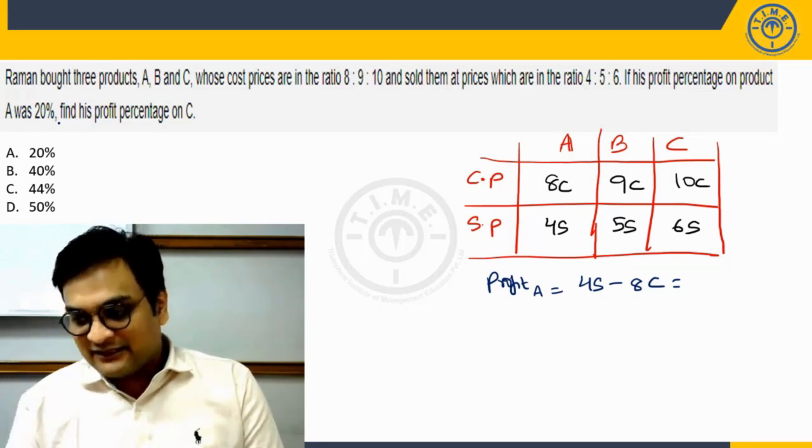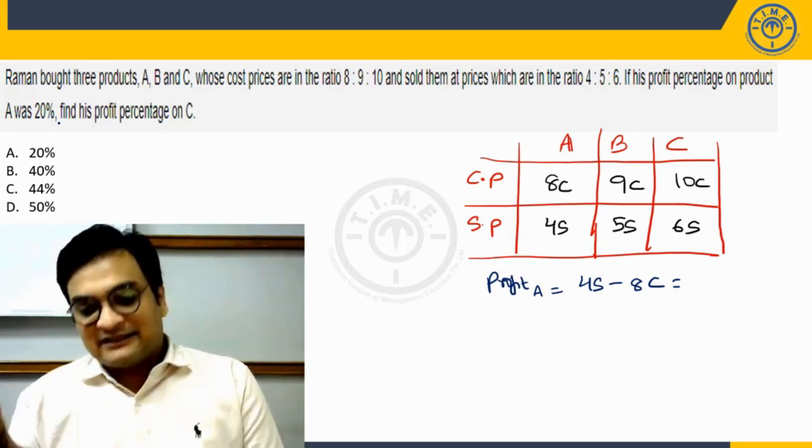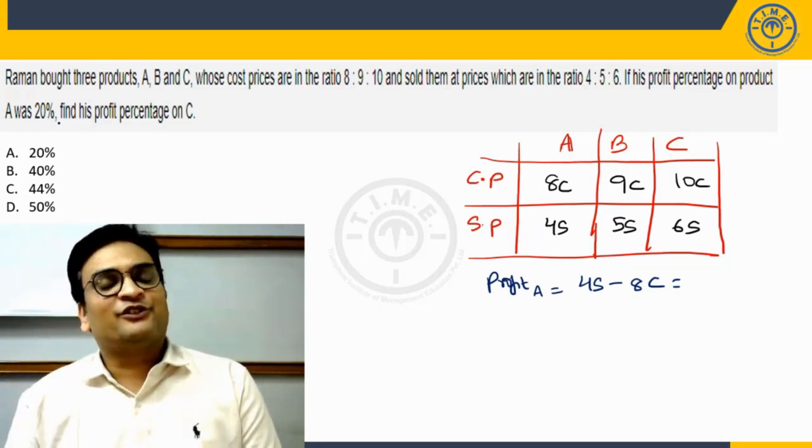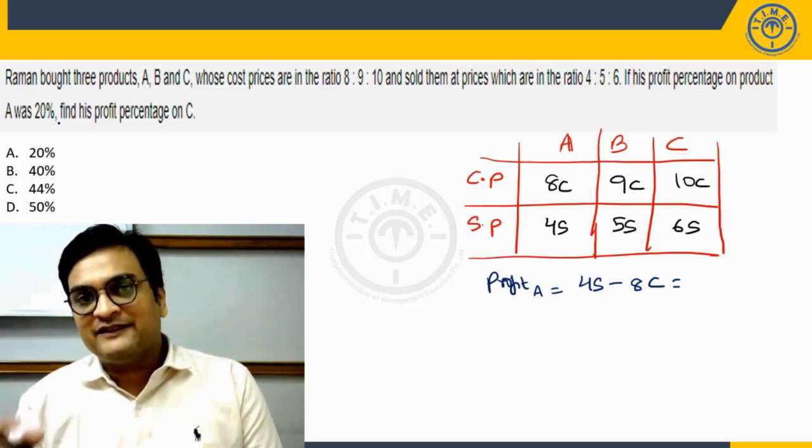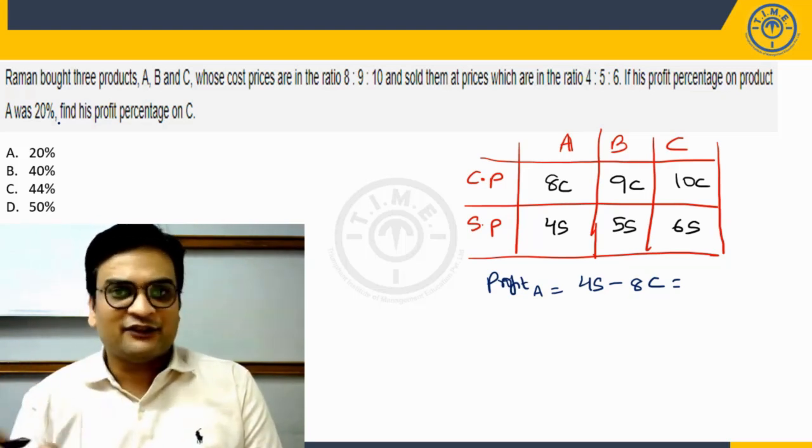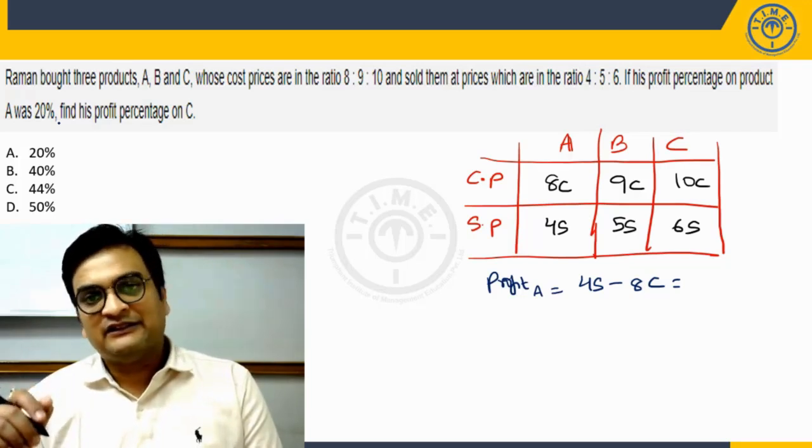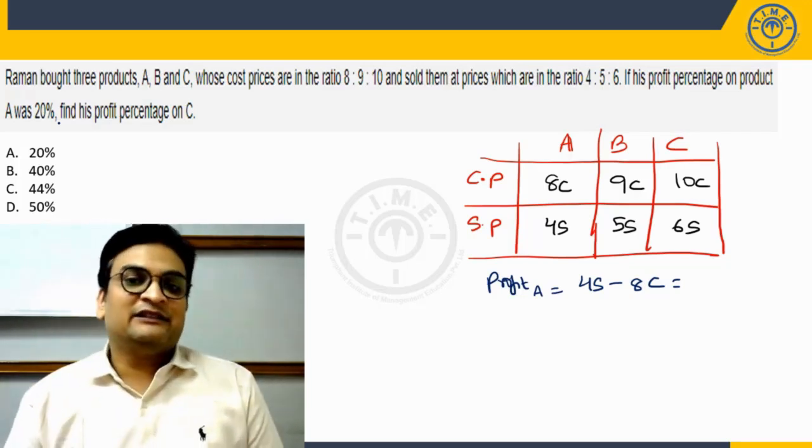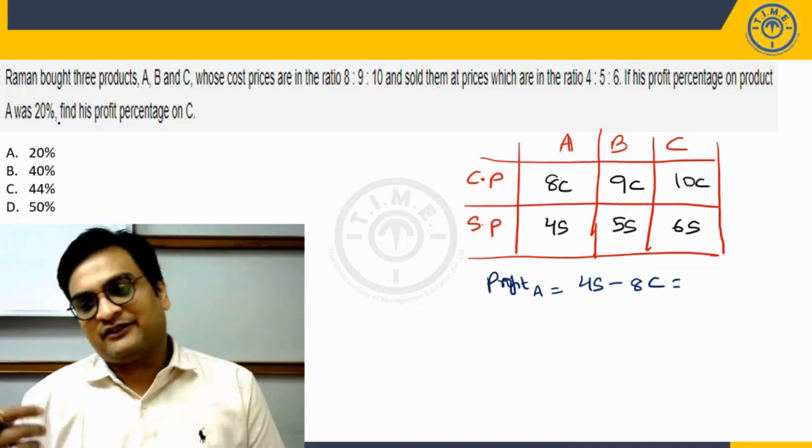Similarly, I am just going one step further. In the same area you have concept of discounts also. Discount percentage is always calculated on marked price, never on selling price or the cost price. It's generally on marked price unless otherwise mentioned again.